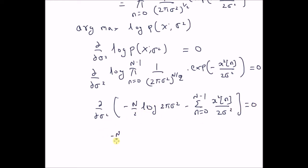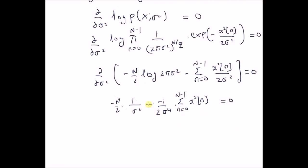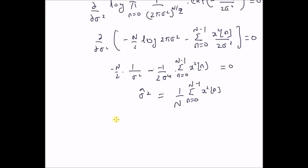So, the derivative of the first term is −N/(2σ²), and for the second term we have −(−1/2) · (1/σ⁴) · Σ(n=0 to N−1) x²(n), and this should equal 0. Upon rearrangement, we can clearly see that the maximum likelihood estimator for σ² is equal to (1/N) Σ(n=0 to N−1) x²(n). Therefore, the statistic is T(x) = Σ(n=0 to N−1) x²(n), the sum of squares of the observations.